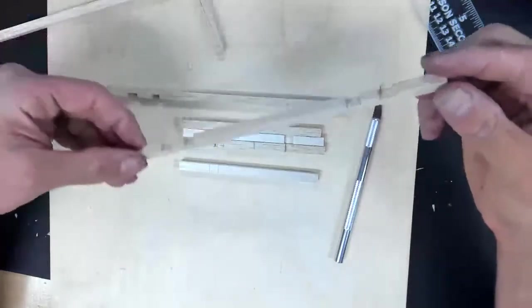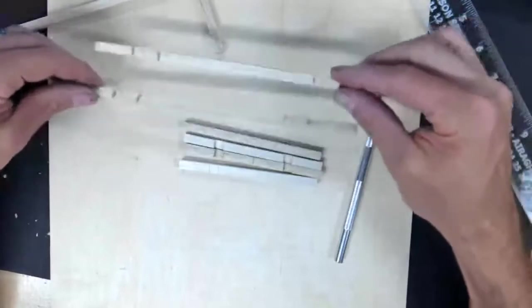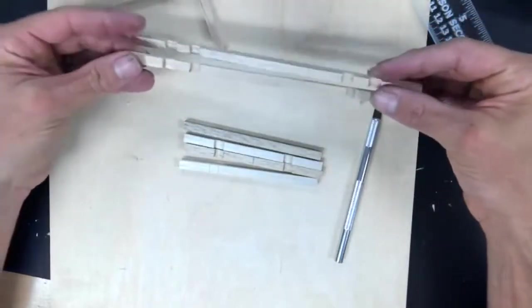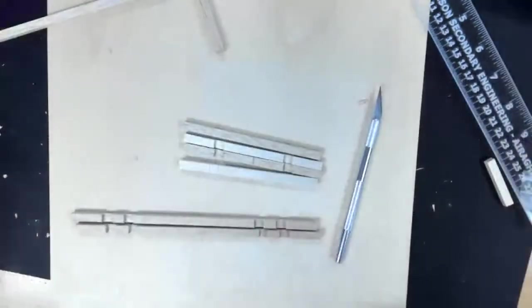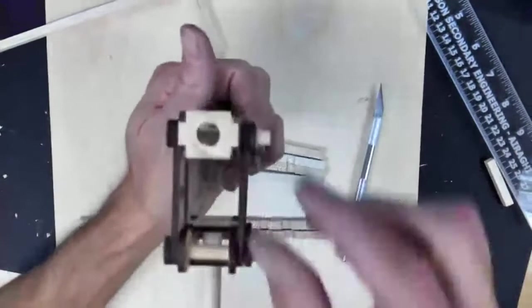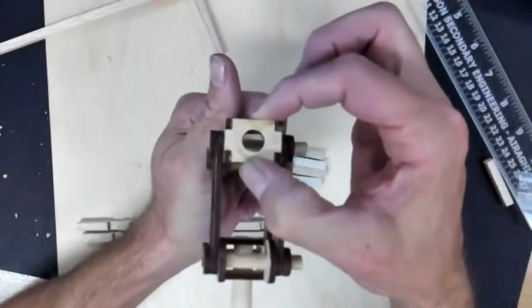So I notched these - it took me a while to notch them. These are my rails that go forward and backwards. I measured this distance, it's one inch, and this is three quarters of an inch.